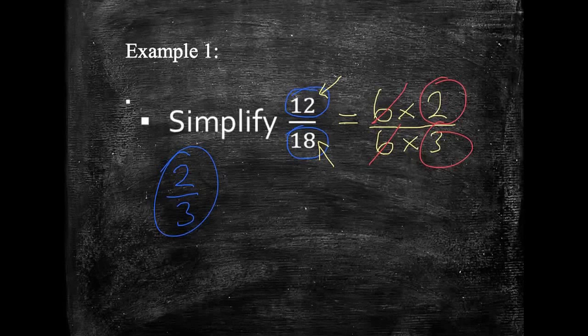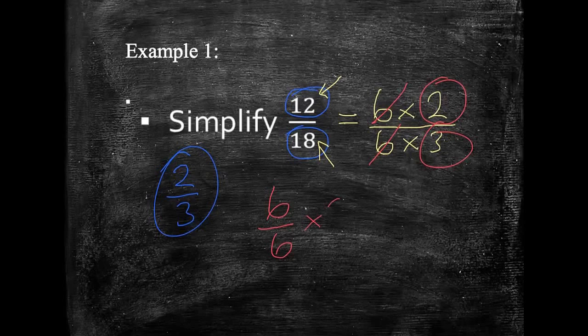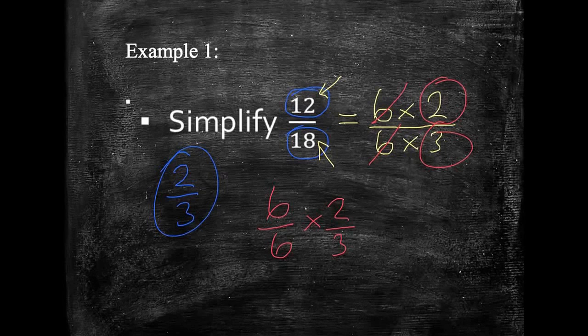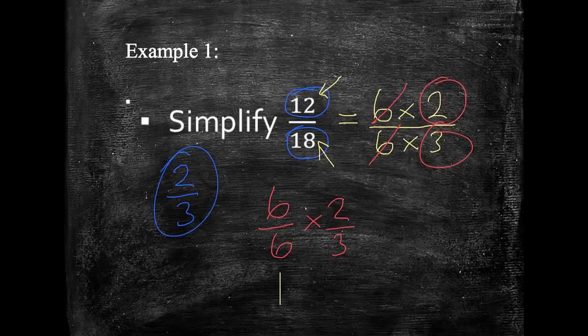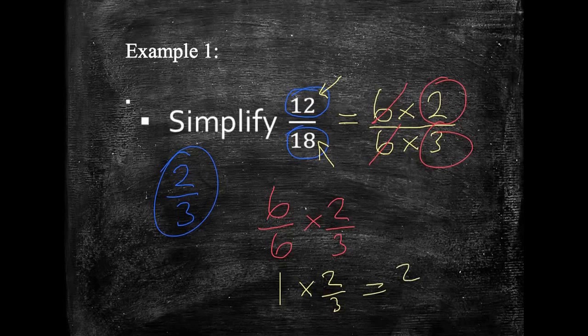Well, again, this goes back to how fractions work. 6 times 2 over 6 times 3 is the same as 6 over 6 multiplied by 2 over 3. Remember, when you're multiplying fractions, we're multiplying tops and multiplying bottoms. So, 6 over 6 is the same as 1. This is the same as 1 lot of 2 thirds, which is just 2 thirds.